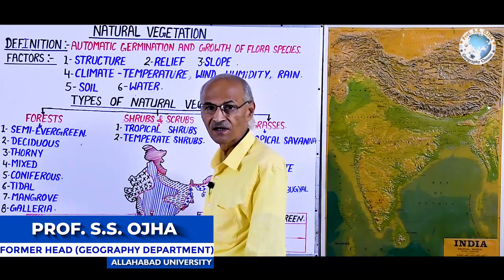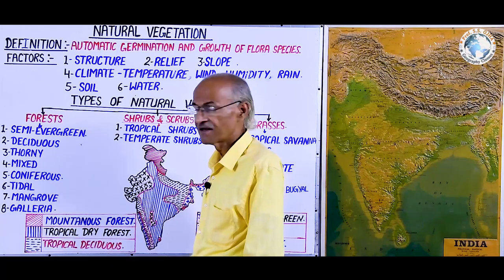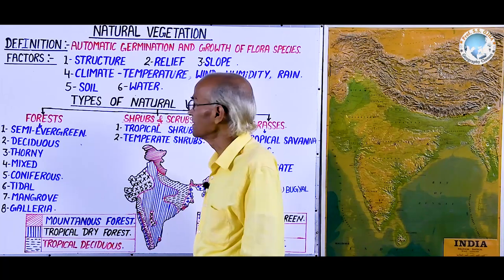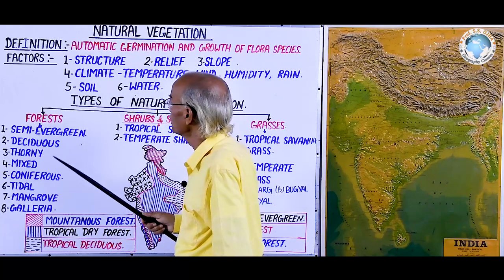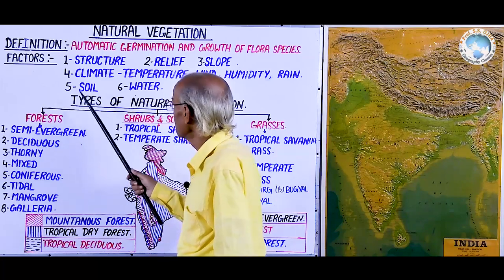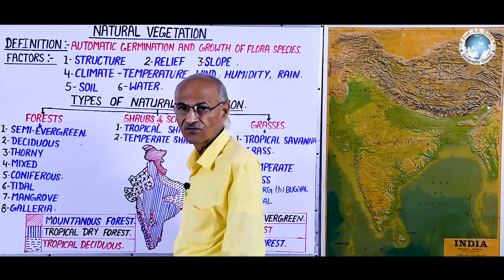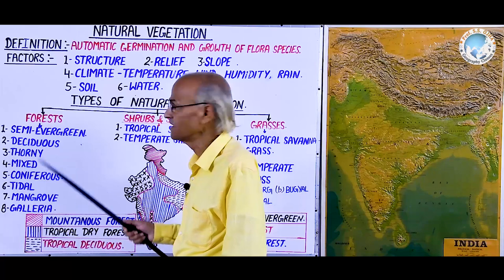Today our earth planet is covered with natural vegetation as well as man-engineered vegetation, especially agricultural crops, horticulture, and agro-culture. After defining vegetation and natural vegetation, let us come to the factors which affect natural vegetation. These are the main six factors which affect and control the growth and distribution of natural vegetation in the world and especially in India.